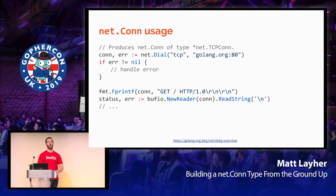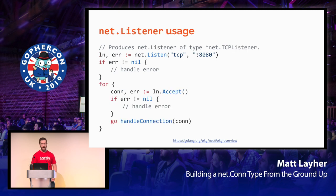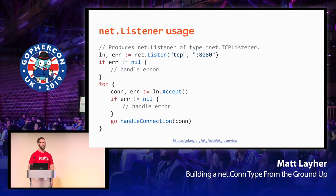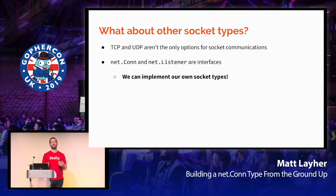If you'd like to use a NetCon in Go on the client side, you would use the net.Dial constructor. In this case, we say we'd like a TCP connection to golang.org port 80. Once we have this NetCon, we can write a raw HTTP request to the connection and read the results. On the server side, we call net.Listen, specify TCP, and bind to all IP addresses on port 8080. From here, we begin a for loop, accepting connections and spinning them off into their own goroutines. These are not the only socket types out there — NetCon and NetListener provide interfaces so we can implement our own socket types as well.